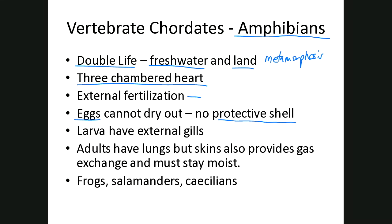Their larva stage, because they're in the water, have external gills. The adults are going to have lungs, but the lungs alone don't provide enough gas exchange to get plenty of oxygen and rid themselves of carbon dioxide. Their skin actually serves as a way to exchange gas, so in order for the skin to function that way they have to have moist skin, giving them a high need for fresh water. Some examples of amphibians are frogs, salamanders, and caecilians.